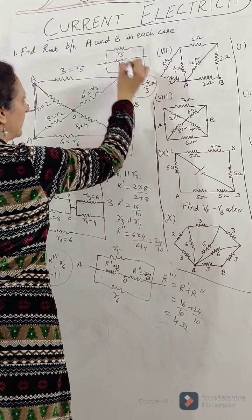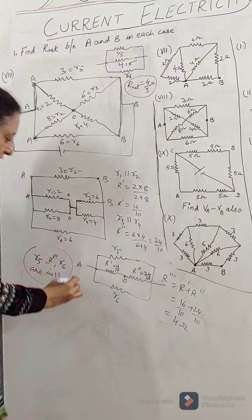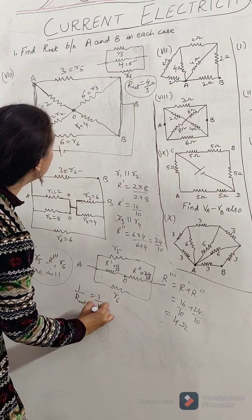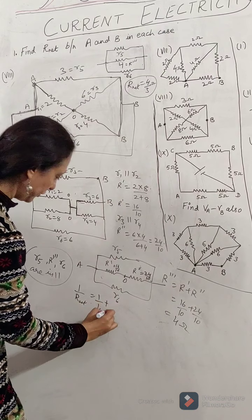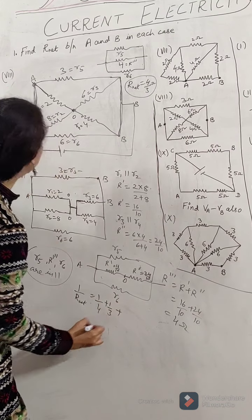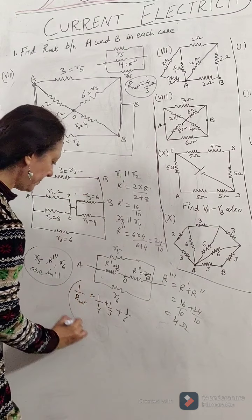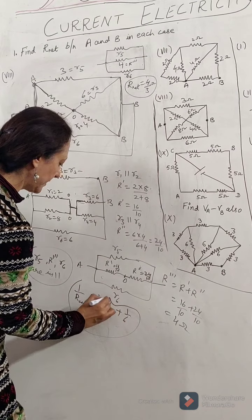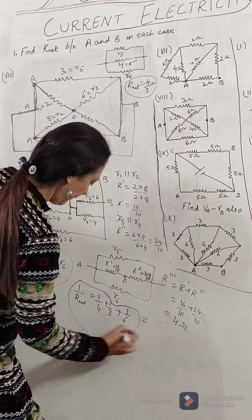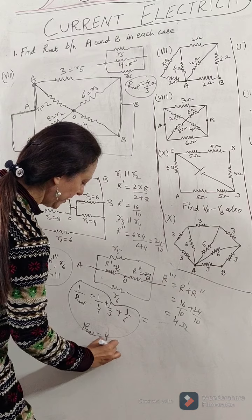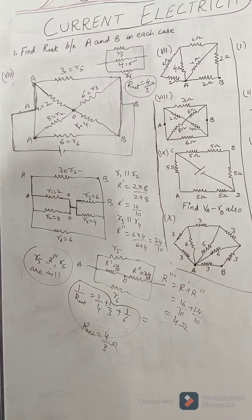When resistances are in parallel, you can also calculate R net. 1 upon R net will be equal to 1 upon 4 plus 1 upon R5 that is 3 ohm plus 1 upon R6 that is 6 ohm. So 1 by 4 plus 1 by 3 plus 1 by 6 will give you the resultant. Finally, R net will come out to be 4 by 3 ohm, is our final answer.